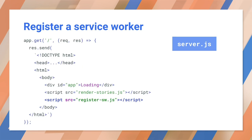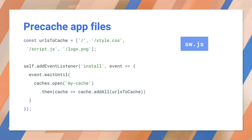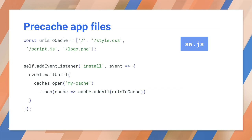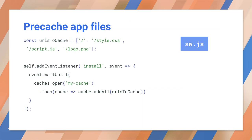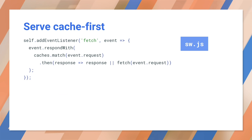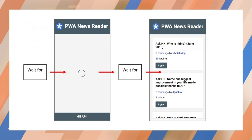So let's add some service worker caching to our app. We won't show it here, but we start by adding a registration script to our shell. Our service worker pre-caches our core app files and implements a cache-first fetch handler for these pre-cached resources. Now the initial loading of the app will be the same as before — wait for the shell, then wait for the content.